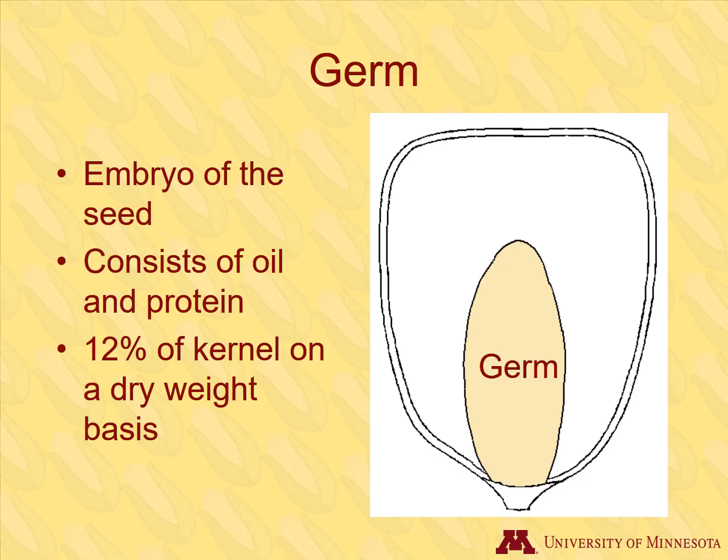The germ is the living part of the kernel. It is the seed embryo, which is the genetic material for the baby corn plant, and consists mostly of oil and protein. About 12% of the kernel is germ. 25% of germ is oil, which is the most economically important component of the germ. In addition to oil and protein, the germ contains vitamins and minerals.